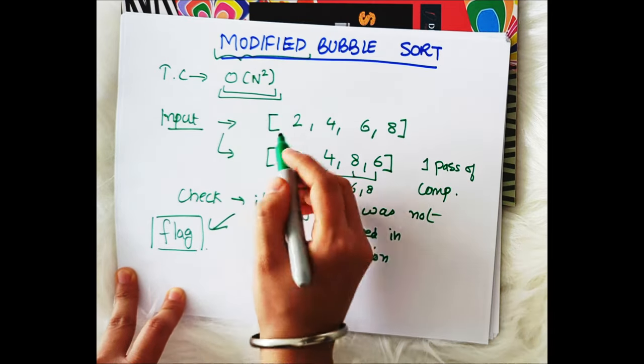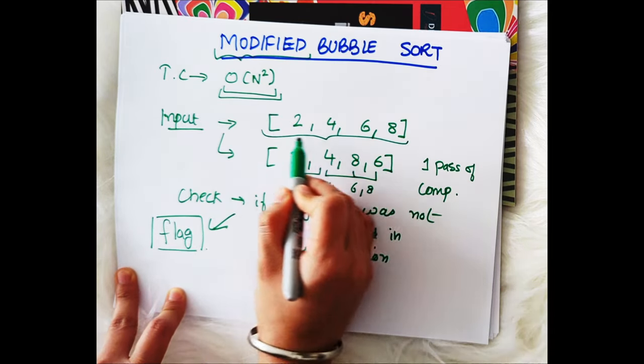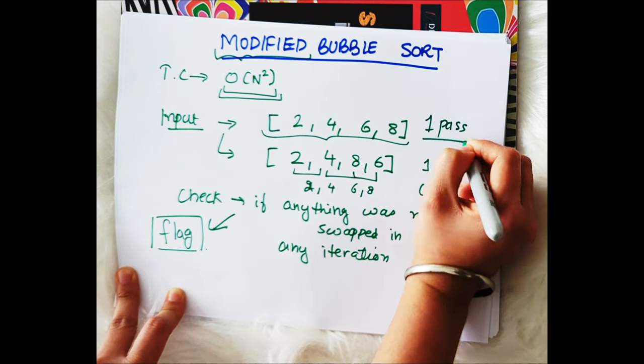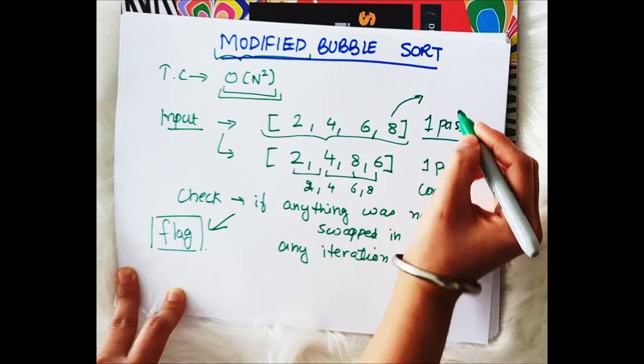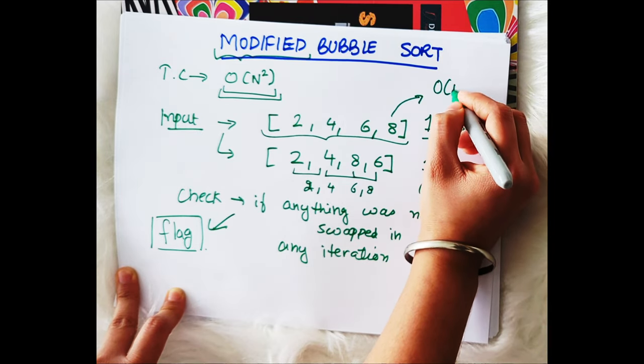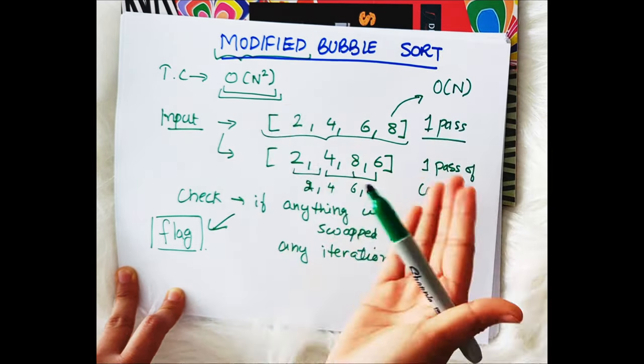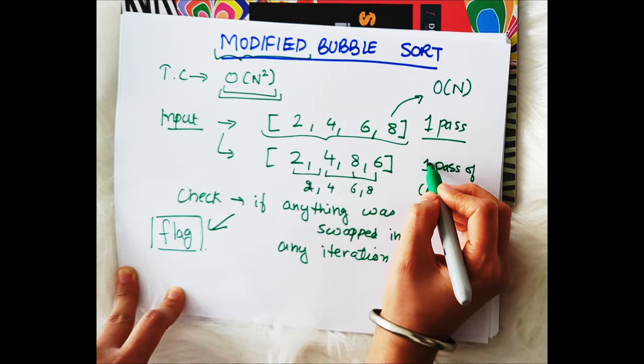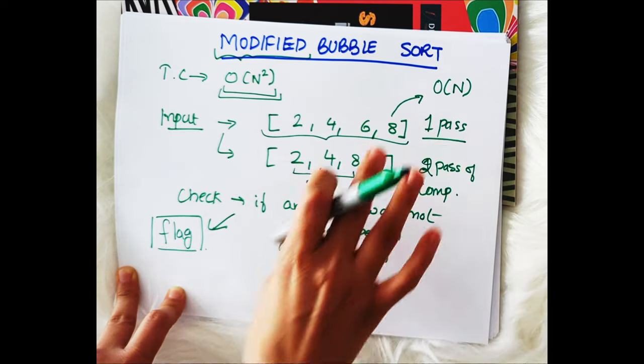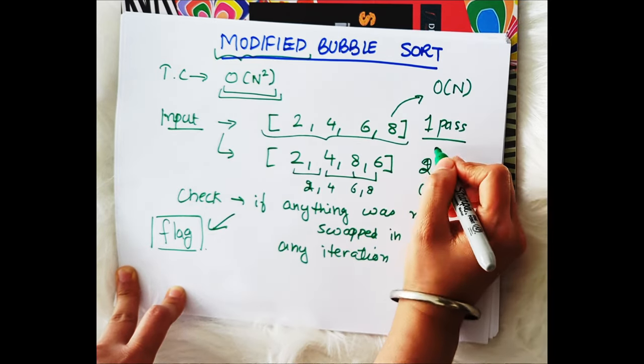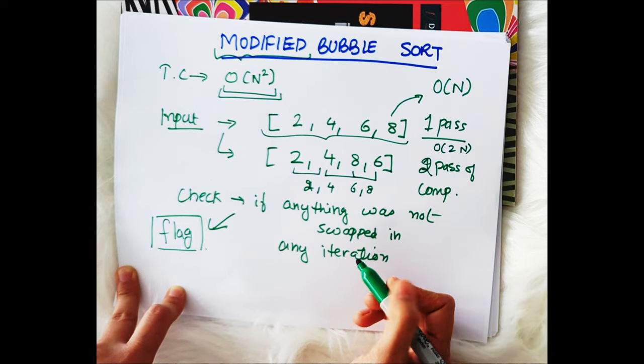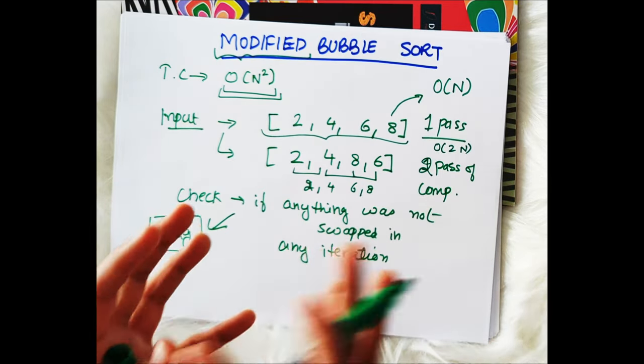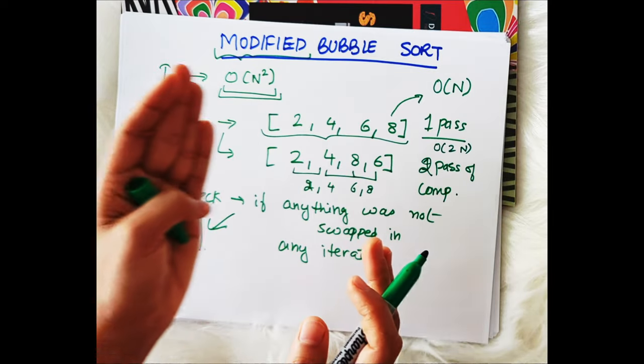So in this case, if let's say everything is already in place, in that case we have done only one pass, right? And that's why here our time complexity will only be O(n) because we are not redoing it. But here we will be doing two passes, the first pass to get it in place and second pass to verify that nothing is swapped. So here it will be O(2n). So similarly as this keeps getting more complex, this will keep on increasing the time complexity.